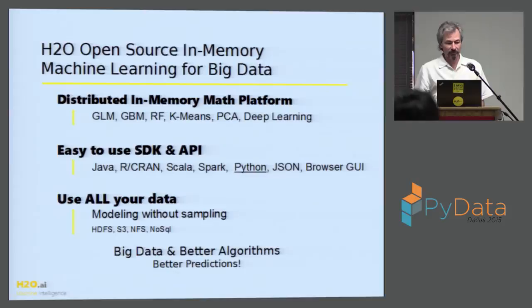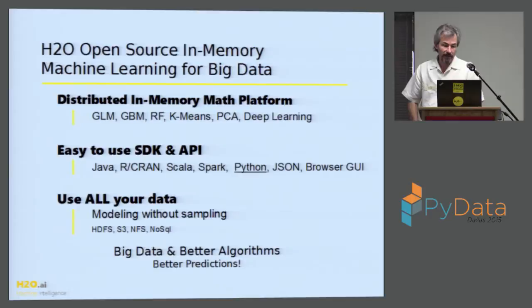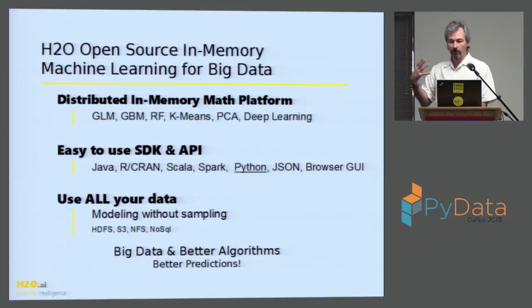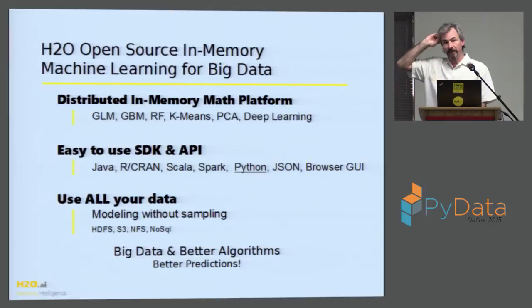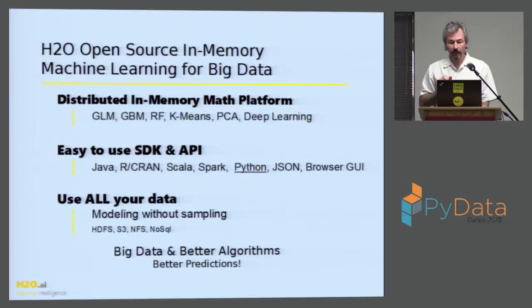H2O is a project I've been working on for the last three years. It's open source — you can get it off GitHub. It's a platform for doing machine learning on big data: distributed, in-memory, and very fast, but also the best quality algorithms we can get. You can run generalized linear modeling, gradient boosted methods, random forest, deep learning, PCA, and more. We have connectors from Java, a strong R connector, and we've basically cloned that technology into a Python wrapper.